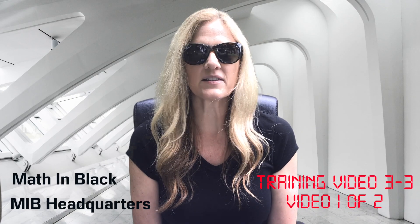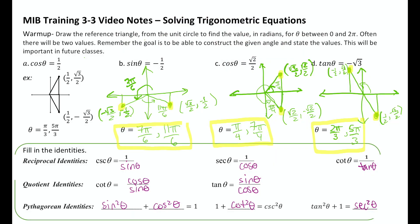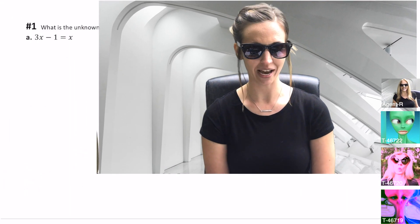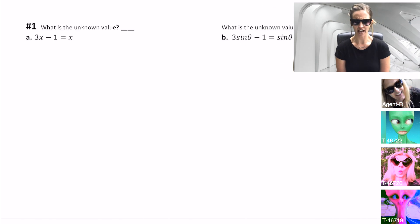Welcome, trainees. Let's resume. Alright, trainees. Let's start with example one. The goal today is to figure out how to solve trigonometric equations. So we're going to take this back to just solving linear equations and see if we can relate the two. The first example, we have 3x minus 1 equals x. Well, what value are we solving for? x, the unknown.